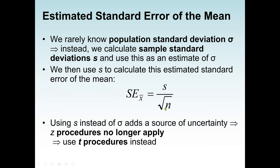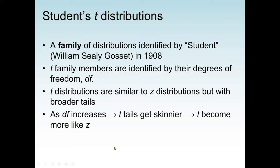In this lecture, we are going to replace the population standard deviation with the sample standard deviation to find the standard error. Here we have S, which stands for sample standard deviation. Instead of using the population sigma, this adds a source of uncertainty, which makes sense to do away with the Z-procedure. So the Z-procedure is no longer applied — now we're going to use the T-procedure or the T-test.